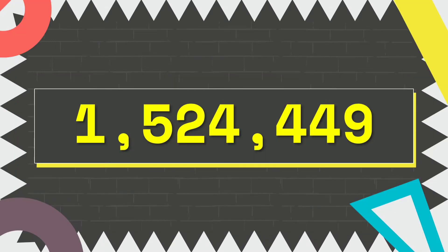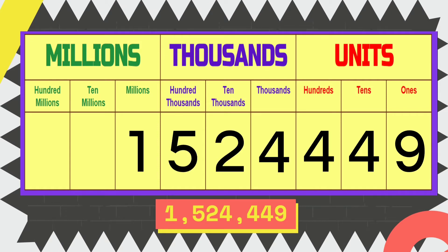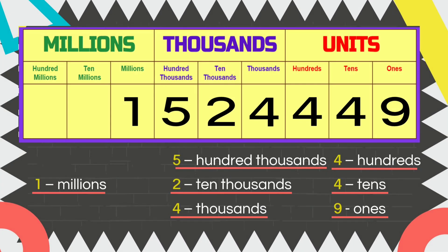Now, let's go back to the number from our statement, which is 1,524,449. We are going to plot the given number in a place value chart. As you can see, each digit has a place or position in a number. Nine from the right is in the ones place, 4 is tens, the other 4 is hundreds, the next 4 is thousands, 2 is ten thousands, 5 is hundred thousands, and 1 is millions.